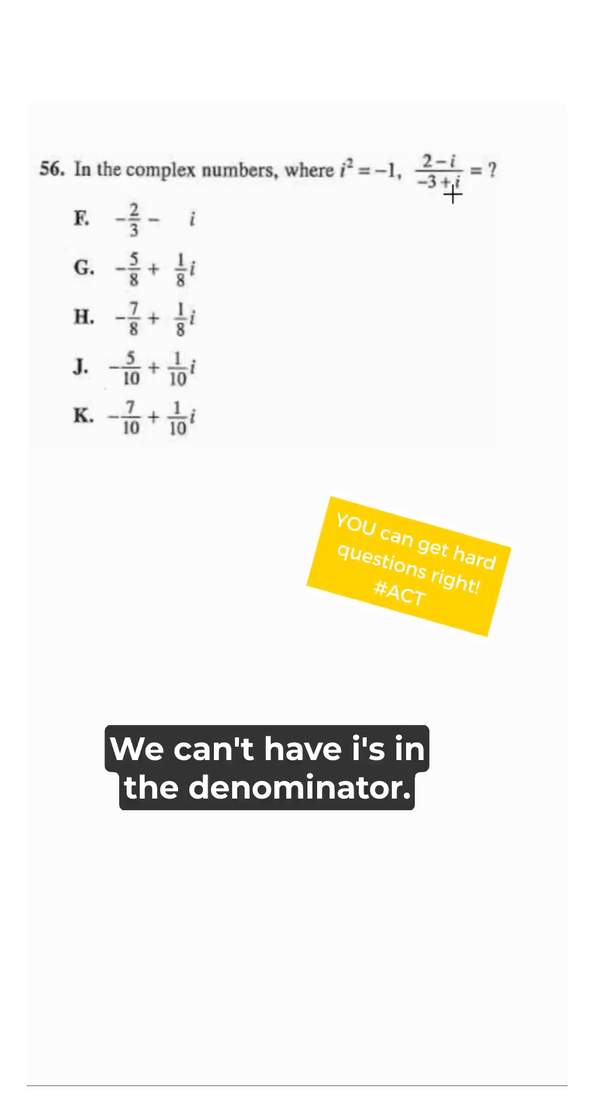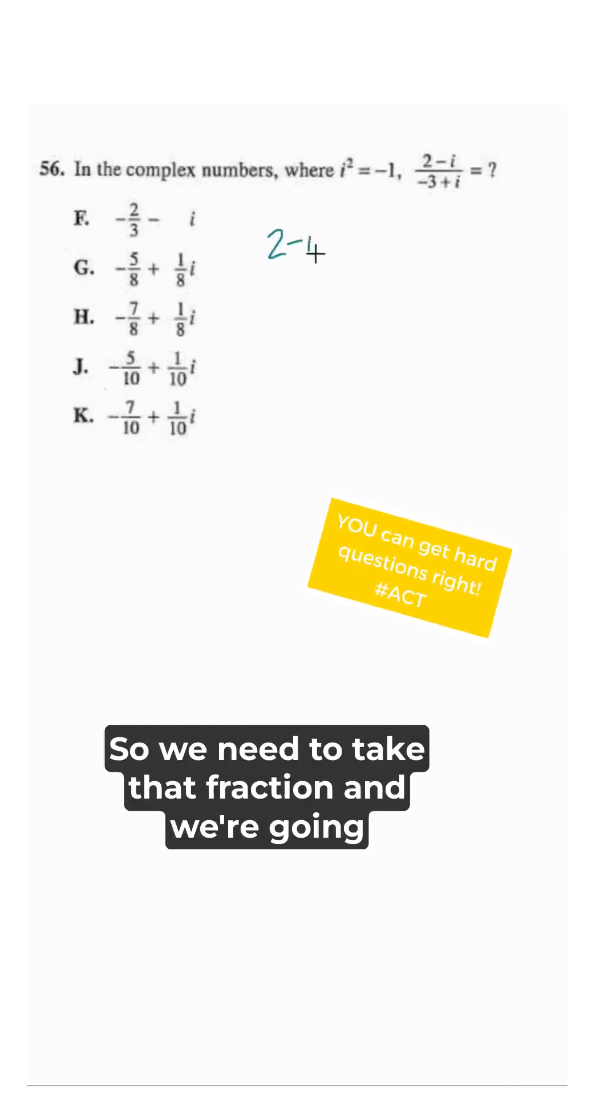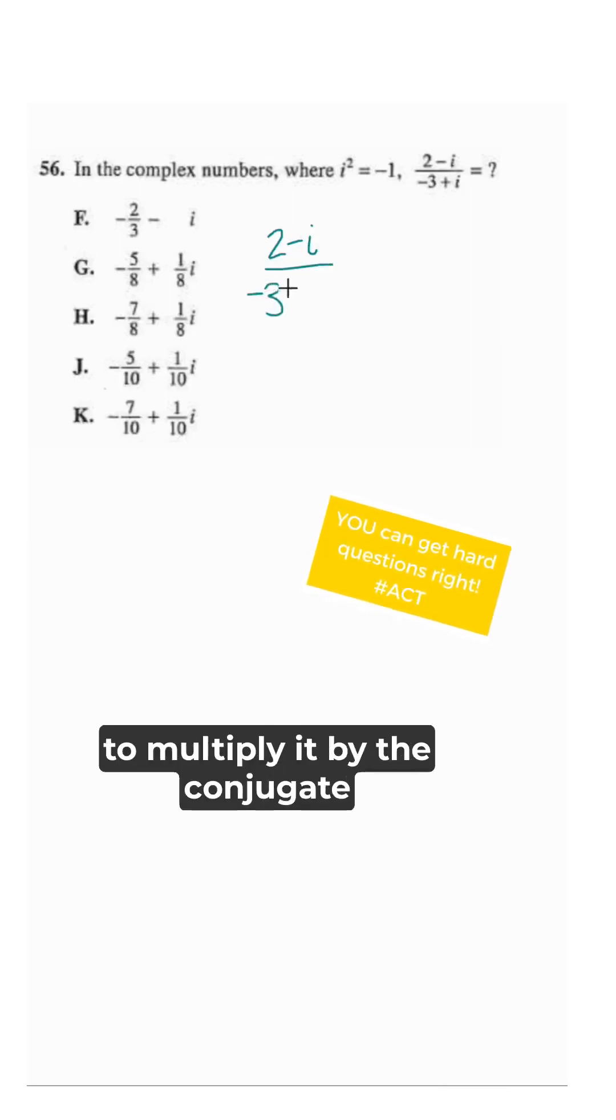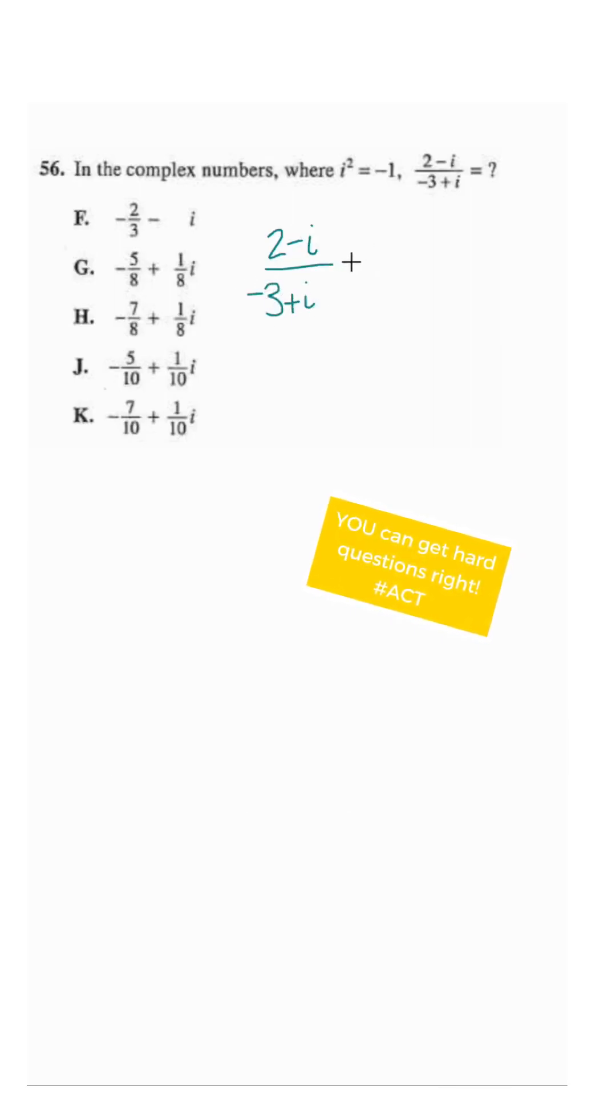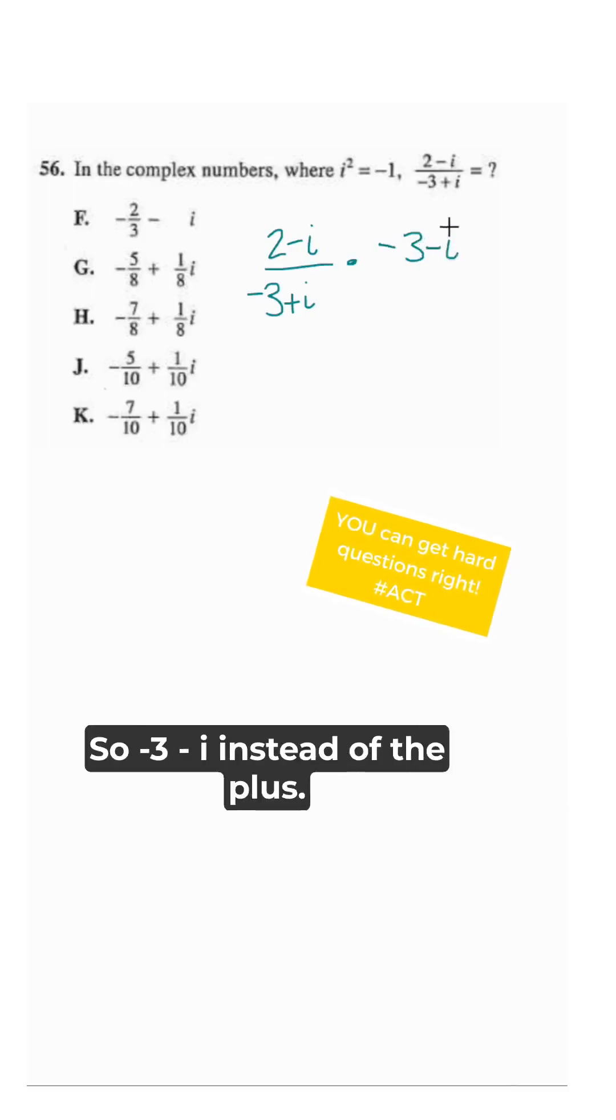We can't have i's in the denominator, so we need to take that fraction and multiply it by the conjugate of the denominator, which is basically changing the sign in between those two: negative three minus i instead of the plus.